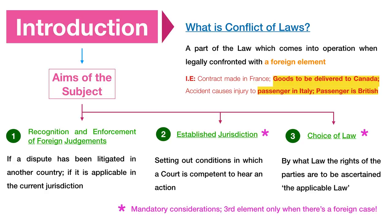In this context, if for example we take a scenario where there is a contract which is made in France for the goods of said contract to be delivered to Canada, and an accident occurs in Italy where the passenger who is injured is in fact British — you have four different circumstances with laws pertaining to different countries, and the injury is sustained in another place, as well as the person who is injured being a resident or citizen of a completely different country. In such a situation, it is important to identify which laws are applicable and why they are so applicable.